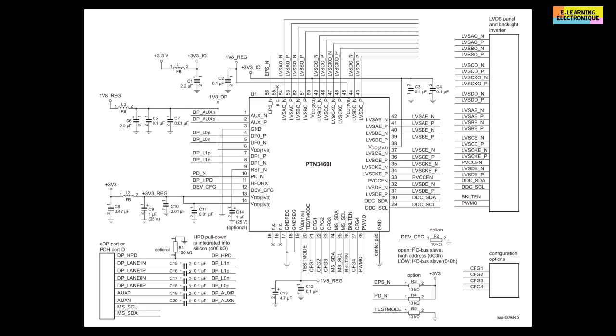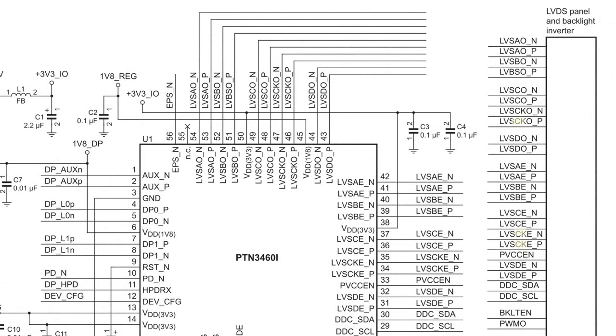Let's see another example with the datasheet of this chip. LVDS is replaced by LVS for short. The identification of the cables uses the letters of the alphabet ABCD followed by the letter O for the odd channel and E for the even channel. The plus and minus symbol has been replaced by the letter P for positive and N for negative.